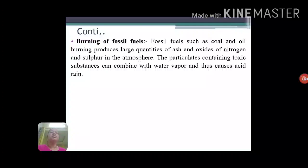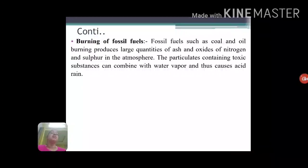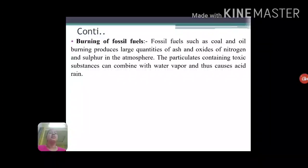Next is burning of fossil fuels. Burning fossil fuels like coal, petroleum, and natural gas produces large quantities of ash and oxides of nitrogen and sulfur into the atmosphere. These nitrogen oxides and sulfur oxides combine with water vapors present in the atmosphere and fall on water bodies along with rainwater, which is termed acid rain. Acid rain makes water bodies acidic and unsuitable for aquatic organisms, thus producing water pollution.